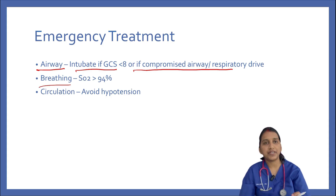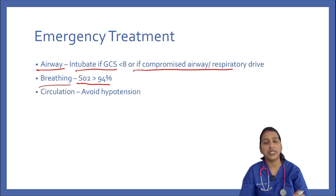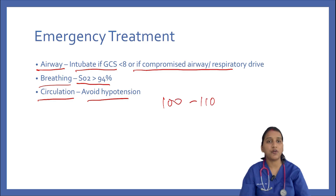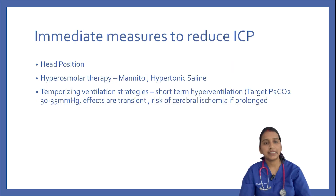Regarding breathing: maintain oxygen saturation greater than 94% and avoid hyperoxia. Regarding circulation: avoid hypotension — keep systolic blood pressure between 100 to 110 mmHg and a MAP greater than 65 mmHg.